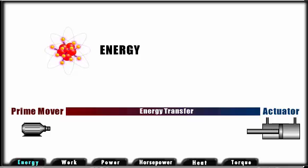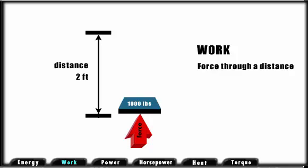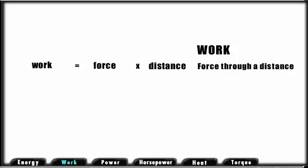Energy may be defined as the ability to do work. Work is defined as force through distance. If we move 1,000 pounds a distance of 2 feet, we have accomplished work. We measure the amount of work in foot-pounds. In our example, we have moved 1,000 pounds 2 feet or have accomplished 2,000 foot-pounds of work.